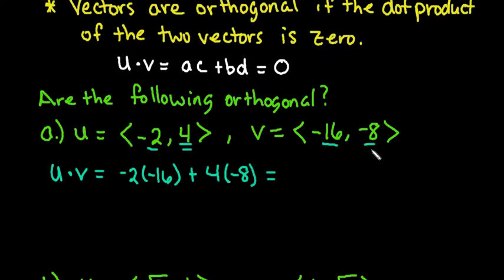So we would take the two y coordinates. If I simplify this, -2 times -16 gives me positive 32. 4 times -8 gives me -32, and this equals zero.